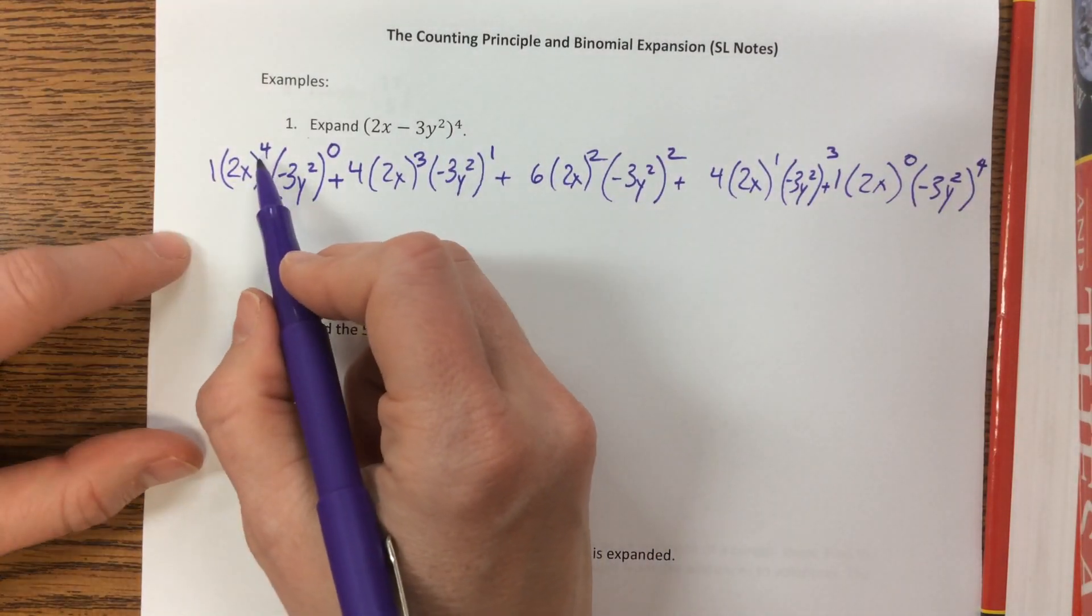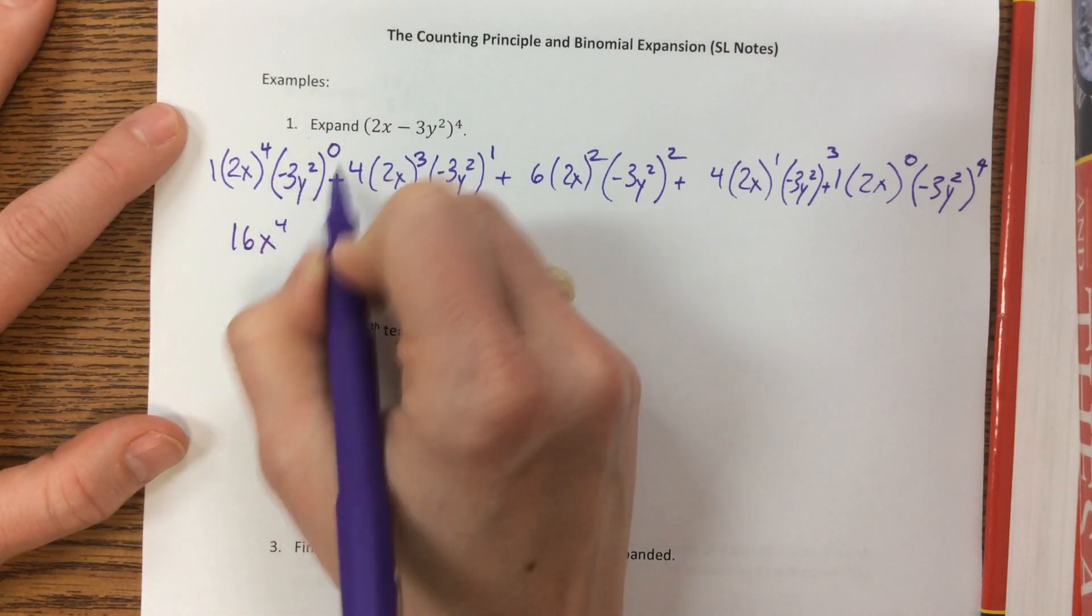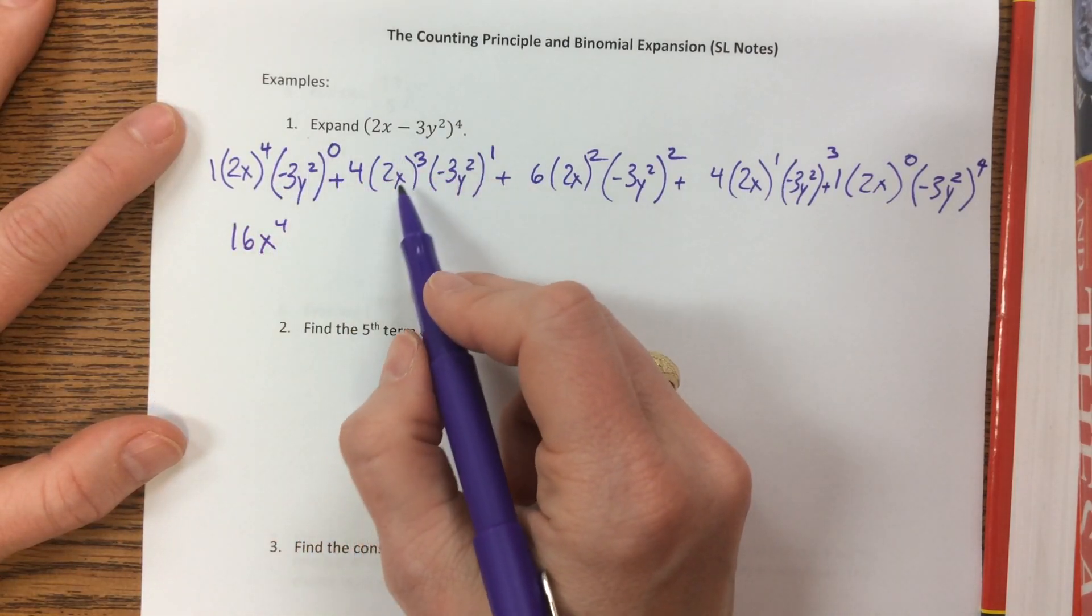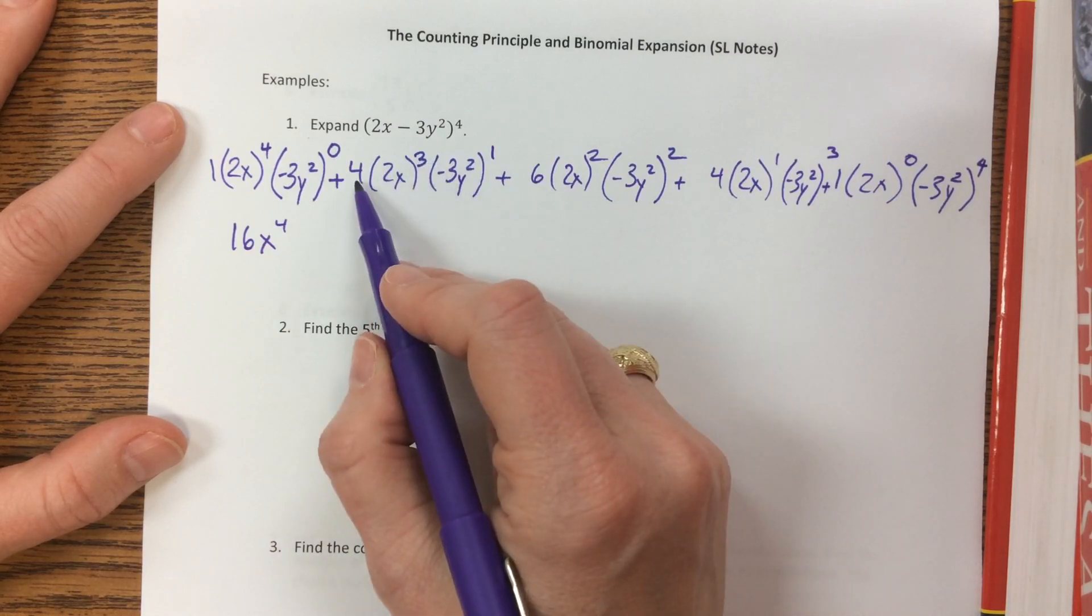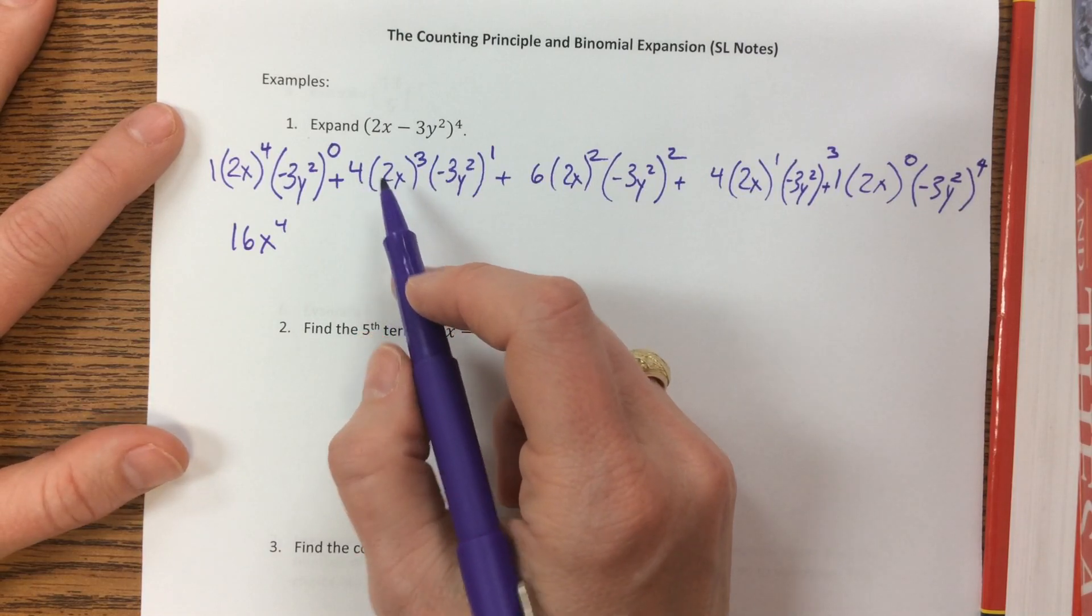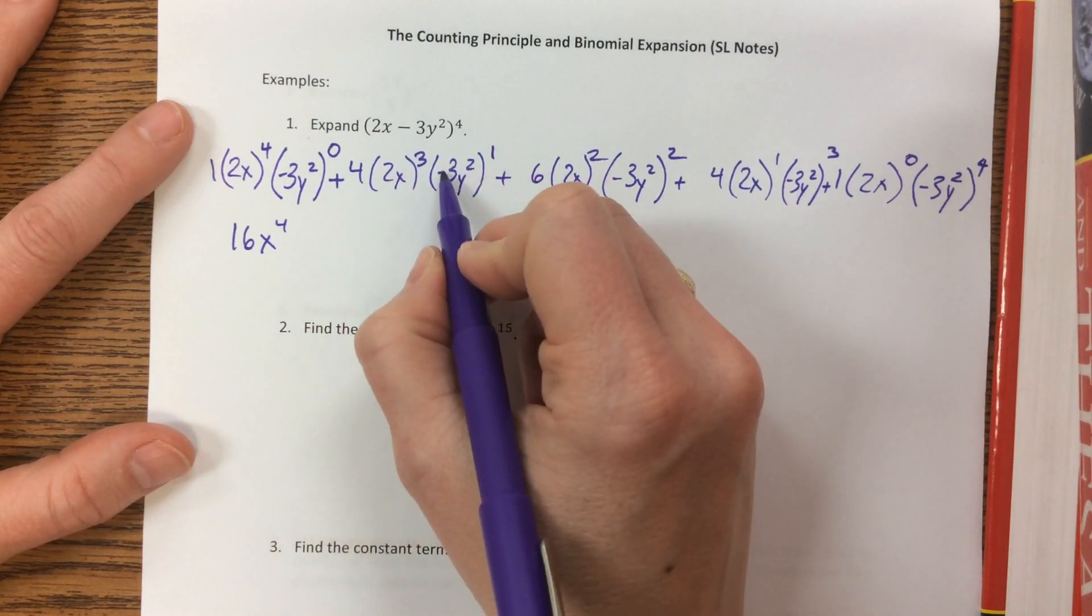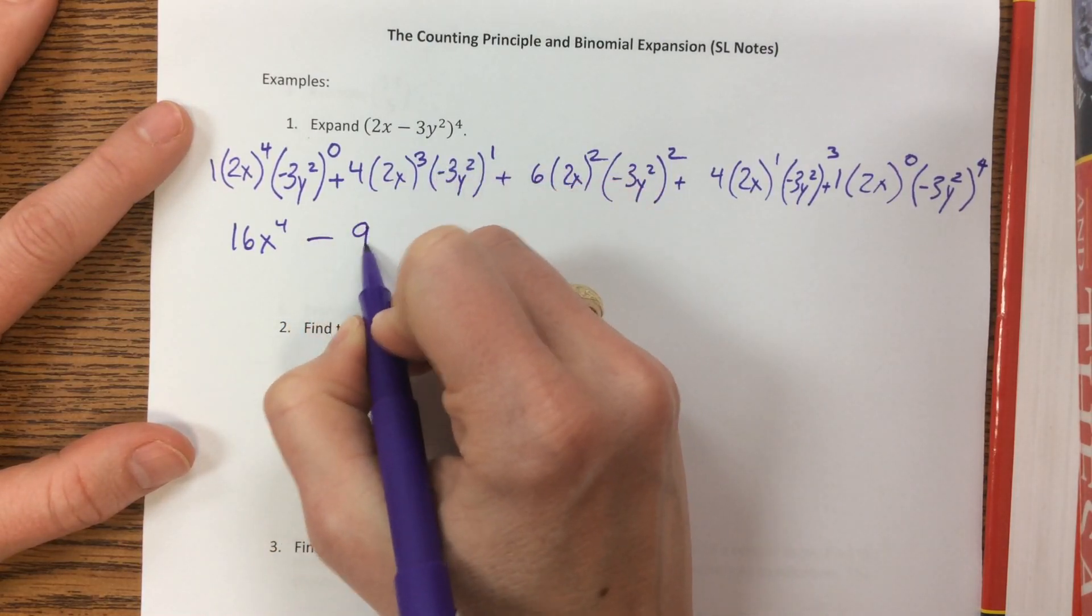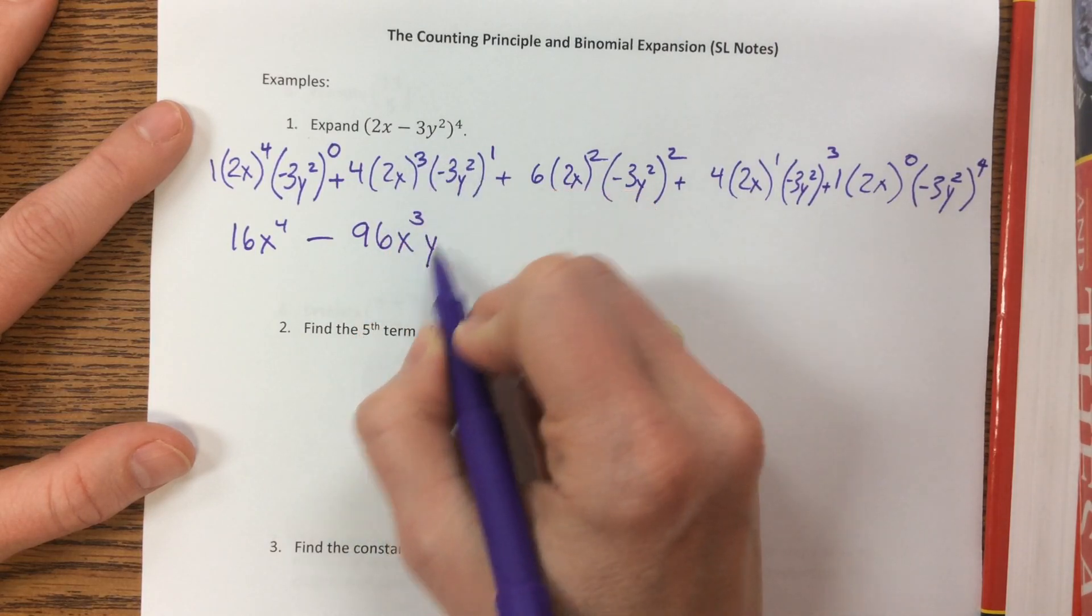And now I have 2 to the 4th, which is 16x to the 4th. This goes to 1. Then I have this 2 to the 3rd is 8 times 4. I got sick over spring break, I'm sorry, I'm a little fuzzy. 32 times 3 is 96, but it's a negative because it's raised to the first power, so it's minus 96. x becomes raised to the 3rd power, y is raised to the 2nd power.